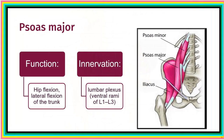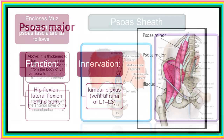The function of psoas major is hip flexion and also lateral flexion of the trunk. Its innervation is from the lumbar plexus, specifically from the L1 to L3 nerves.